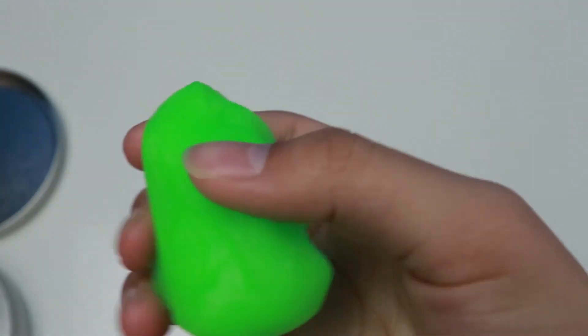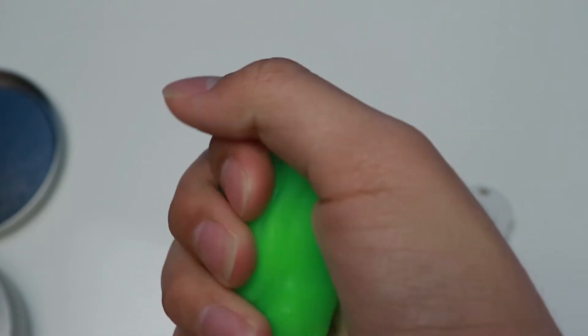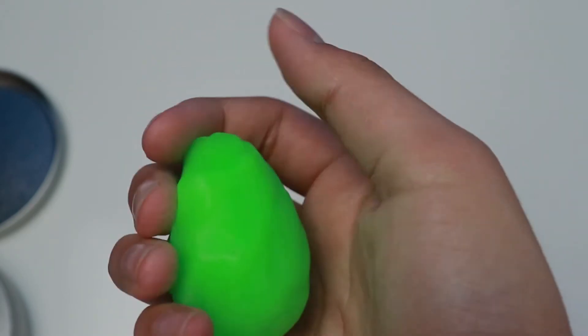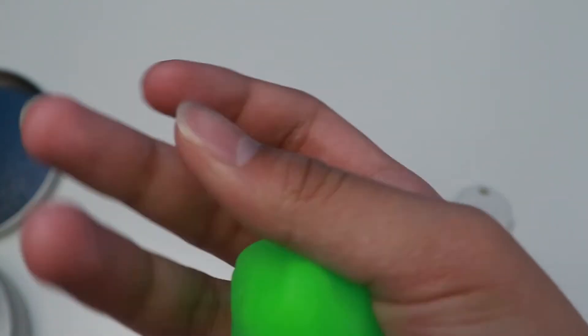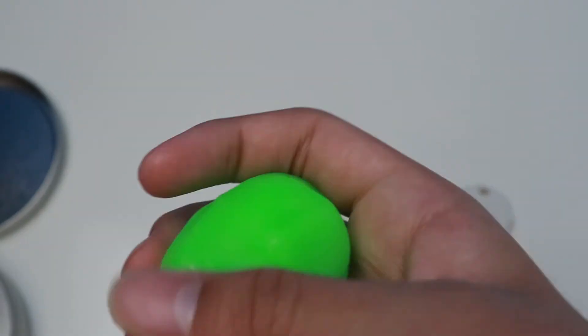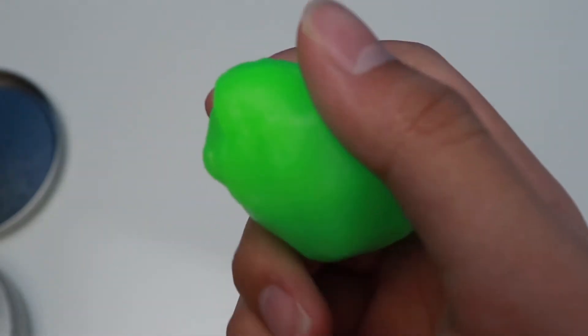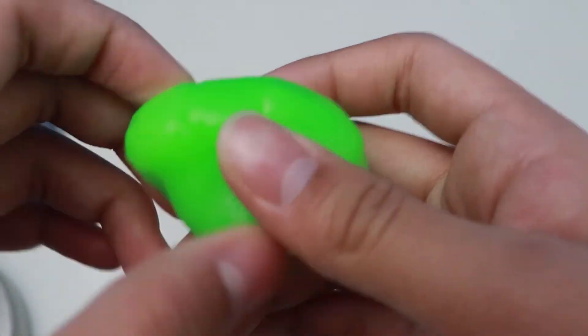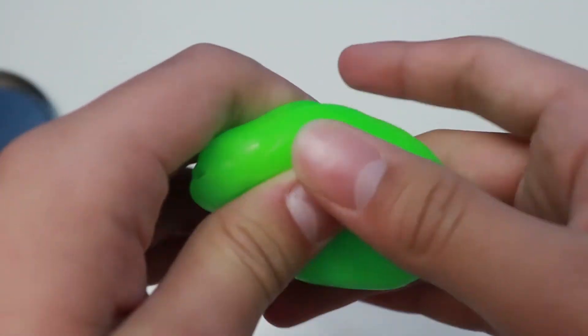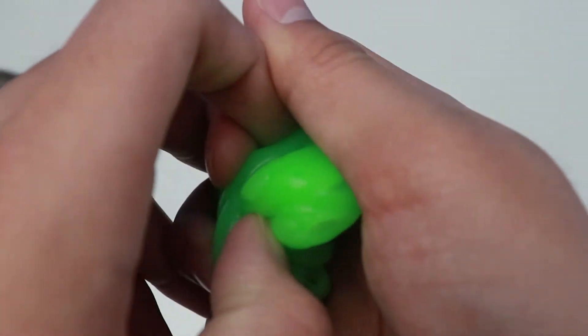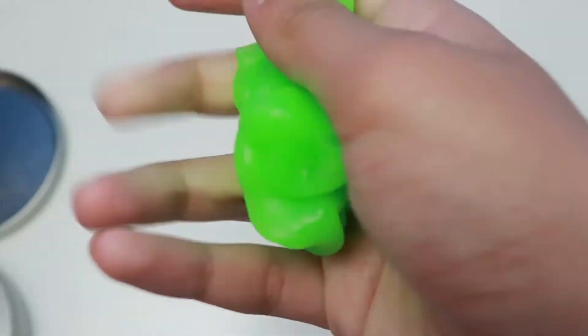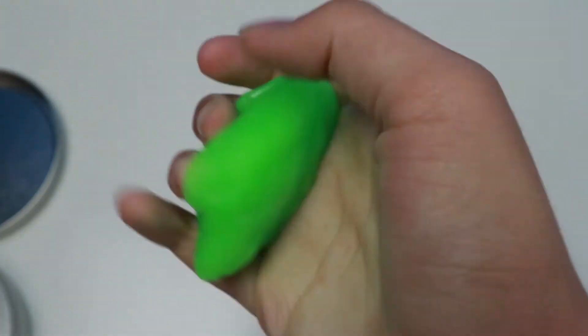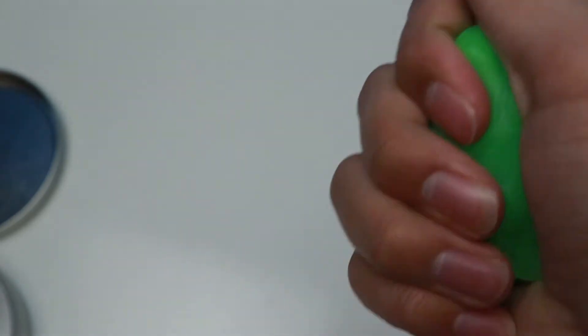And this putty can sculpt. You can create your own Crazy Aaron's Thinking Putty Invisible Ink. This is so much fun. The Invisible Ink Thinking Putty for Crazy Aaron's Thinking Putty is made for kids and they can play it.